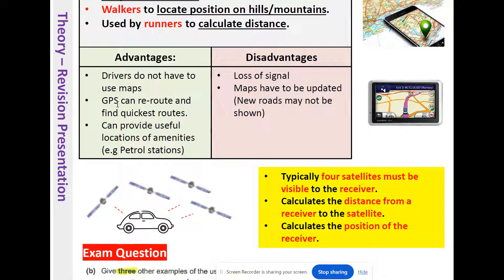Advantages of GPS: drivers do not have to use maps, GPS can re-route to find the quickest routes, and it can provide useful locations of amenities like petrol stations. However, sometimes there may be no signal if you're in the middle of nowhere, and sometimes maps may not be updated — for example, if there are roadworks or a new road has been created, it may not appear on maps initially.